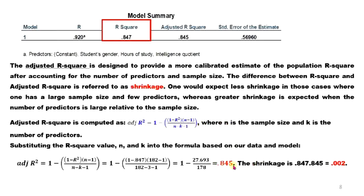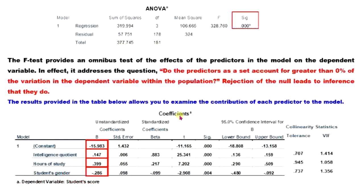One would expect less shrinkage when the sample size is large and there are few predictors, whereas greater shrinkage is expected when the number of predictors is large relative to sample size. The adjusted R-squared here is 0.845. The question is: do the predictors as a set account for greater than 0% of the variation in the dependent variable within the population? Rejecting the null leads to the inference that they do.